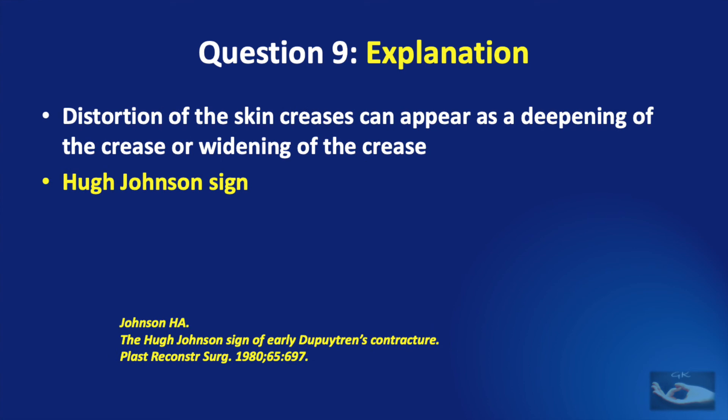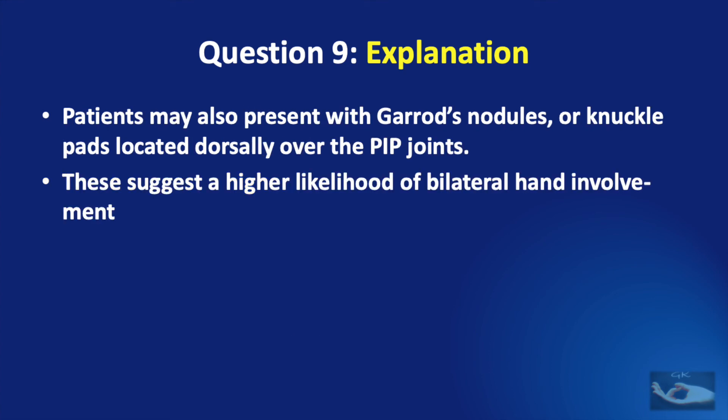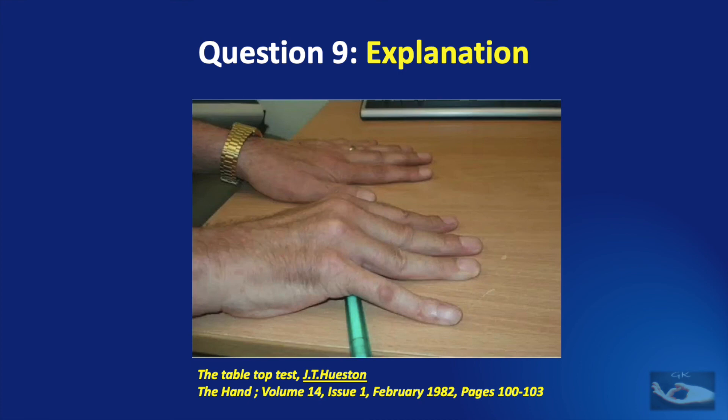The Hugh-Johnson sign refers to the distortion of the skin creases that can appear as a deepening or widening of the crease in Dupuytren's contracture. Patients with Dupuytren's contracture can also present with Garrard's nodules or knuckle pads located dorsally over the PIP joints, which suggest a higher likelihood of bilateral hand involvement. One of the first symptoms of Dupuytren's contracture is when the patient cannot keep his palm flat on the table — this is known as the table-top test of Houston.